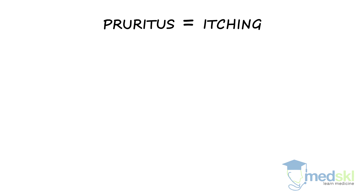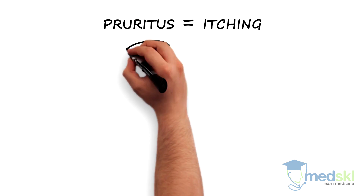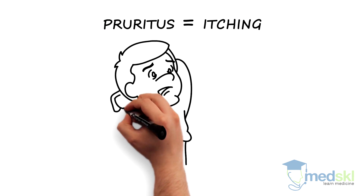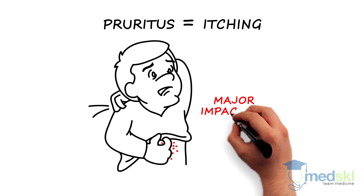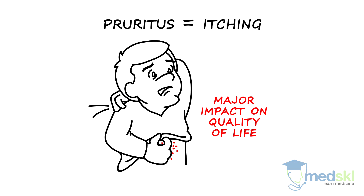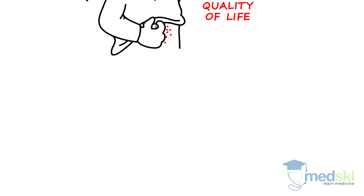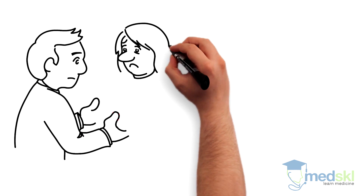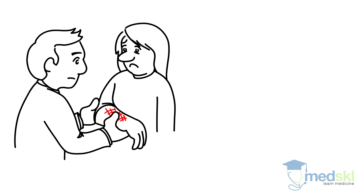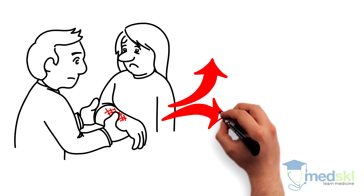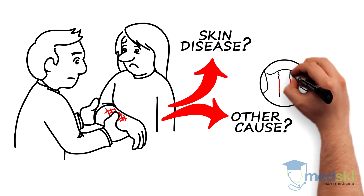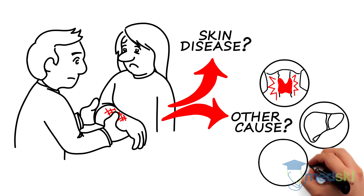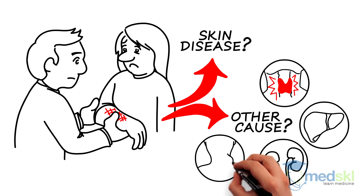Pruritus, or itching, is a common symptom in many skin diseases. It can be incredibly debilitating with a major impact on quality of life. When assessing patients with generalized itch, it is important to distinguish two main types of pruritus: pruritus from a skin disease, or from another cause, including thyroid, liver, and kidney problems, and cancer.